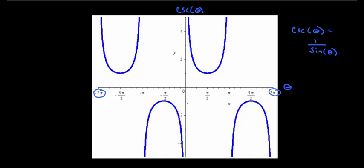For the domain we are going to use every value for theta except for the following. We are not using 0, we are not using π, we are not using 2π or negative π or negative 2π. So it looks like multiples of π.